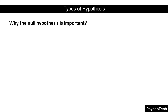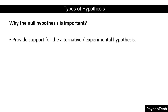Yes, the alternative hypothesis is more important, however we can never 100 percent prove it. What we do instead is see if we can disprove or reject the null hypothesis. If we reject the null hypothesis, this doesn't really mean that our alternative hypothesis is correct, but it does provide support for the alternative or experimental hypothesis. So this was all about hypothesis and types of hypothesis — see you in the next video with a new topic.